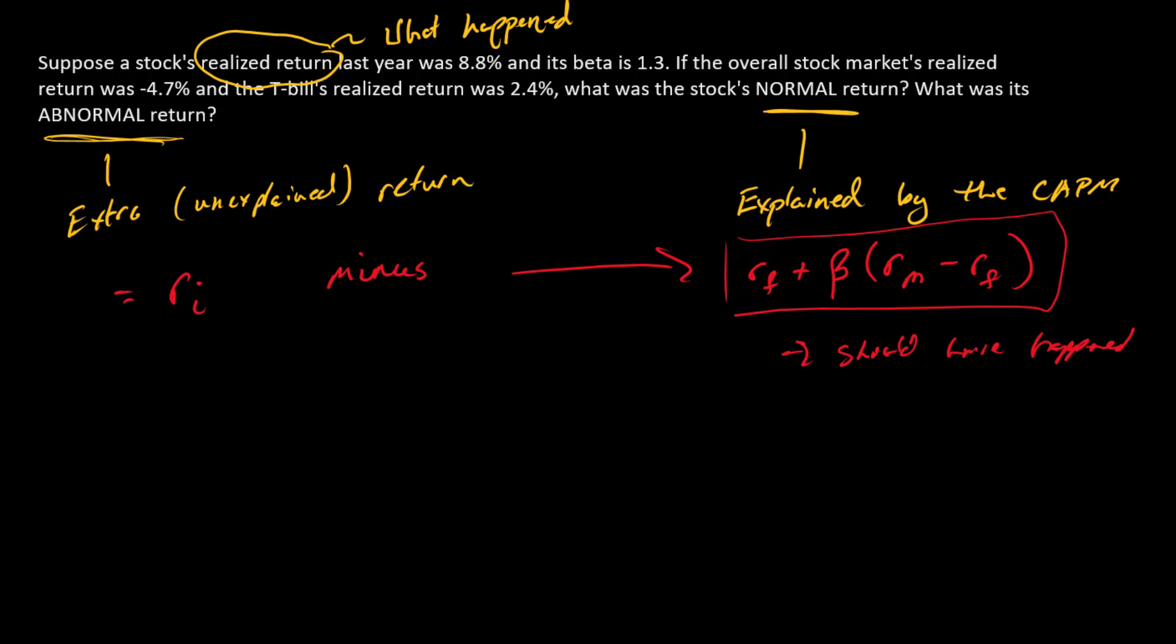So let's add some numbers here and do our calculations. We'll start with the normal part or the part that's explained by the CAPM. So if the Treasury bill realized 2.4% and the overall market went down 4.7%, what should this stock have done according to the CAPM? So the normal return equals the T-bill plus stock's beta times the difference between the overall market, and so that's negative 0.047 minus 0.024, the difference between the overall market and the T-bill.